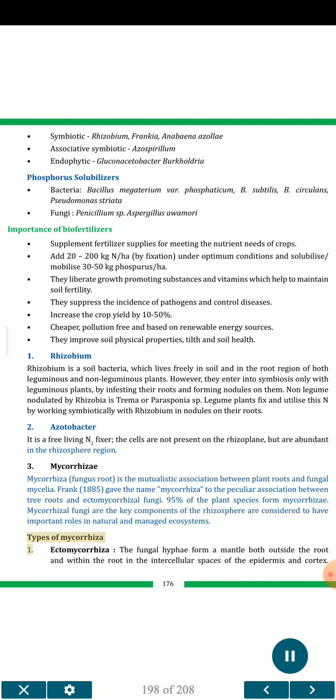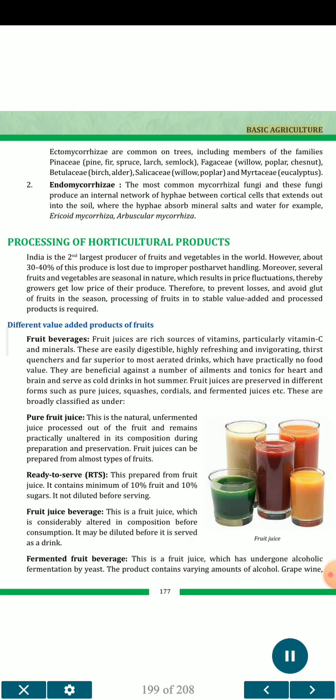Types of mycorrhizae: 1. Ectomycorrhizae — the fungal hyphae form a mantle both outside the root and within the root in the intercellular spaces of the epidermis and cortex. Ectomycorrhizae are common on trees including members of the family Pinaceae (pine, fir, spruce, larch), Fagaceae (beech, chestnut), Betulaceae (birch, alder), Salicaceae (willow, poplar), and Myrtaceae (eucalyptus). 2. Endomycorrhizae — the most common mycorrhizal fungi; these produce an internal network of hyphae between cortical cells that extends into the soil, where hyphae absorb mineral salts and water. Examples include ericoid mycorrhizae and arbuscular mycorrhizae.